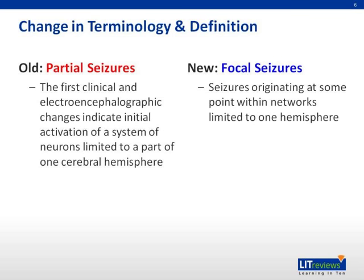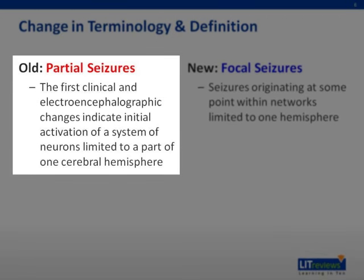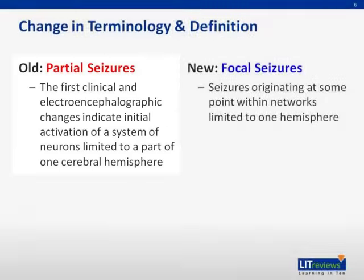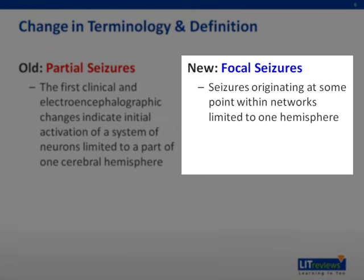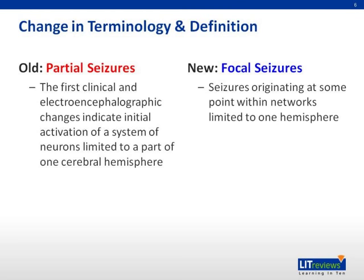During your reading, you may have encountered the term partial seizure. This was the term used for an epileptic seizure where the first clinical and electroencephalographic change indicates activation of a system of neurons limited to one cerebral hemisphere. This is equivalent to a focal seizure under the new classification. The new definition of a focal seizure is that of a seizure originating from a point within networks limited to one hemisphere. The terminology and definition have been changed to better reflect our current understanding of seizures.